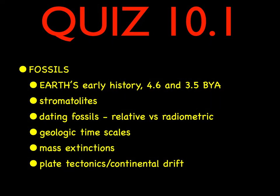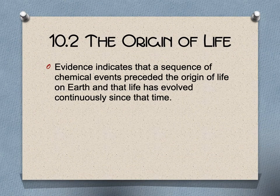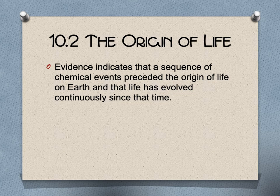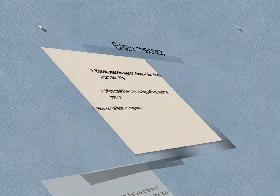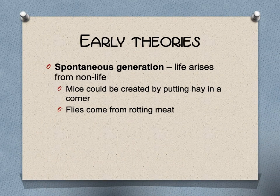That's it for section 10.1 — all those topics are covered, study hard for your quiz. Moving on to section 10.2, the origin of life: evidence indicates that a sequence of chemical events preceded the origin of life on Earth, and that all life has evolved continuously since that moment in time.